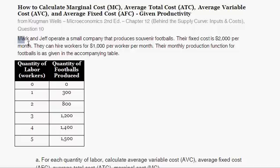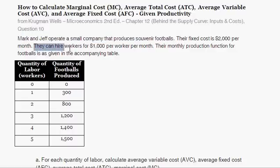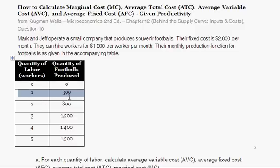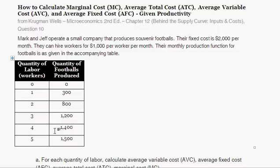The question reads: Mark and Jeff operate a small company that produces souvenir footballs. The fixed cost is $2,000 per month, and they can hire workers for $1,000 per worker per month. Their monthly productivity function for footballs is given in a table. With zero workers they produce zero footballs; one worker produces 300 footballs; two workers produce 800 footballs; and up to five workers producing 1,500 footballs.